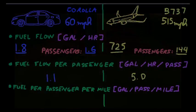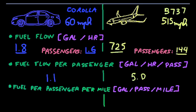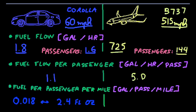So just finishing off with the actual numbers. If we divide the fuel flow per passenger by the speed, 60 miles per hour for the Corolla and 515 miles per hour for the Boeing 737, we obtain the amount of fuel per passenger per mile. For the car, this number is 0.018 gallons per passenger per mile, or 2.4 oz per passenger per mile. Now for the plane, we only need half of this, 1.2 oz per passenger per mile.